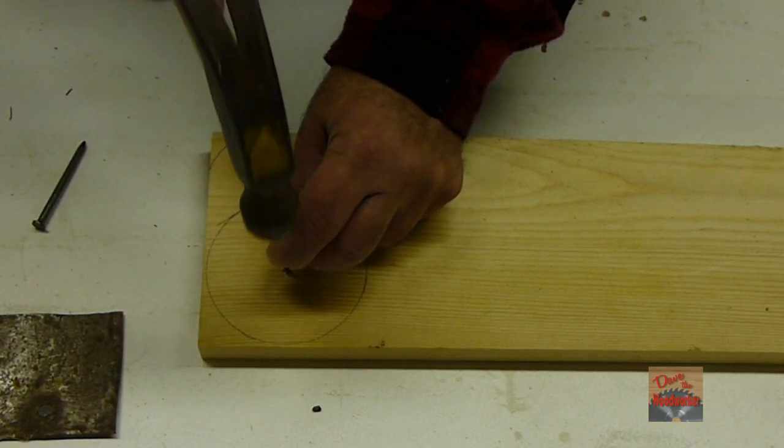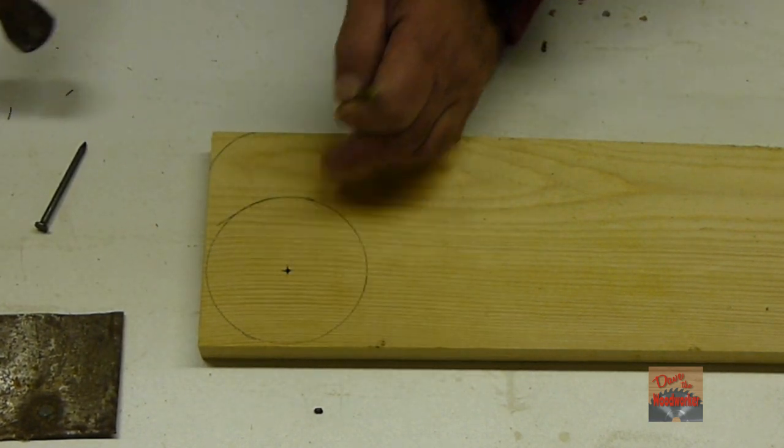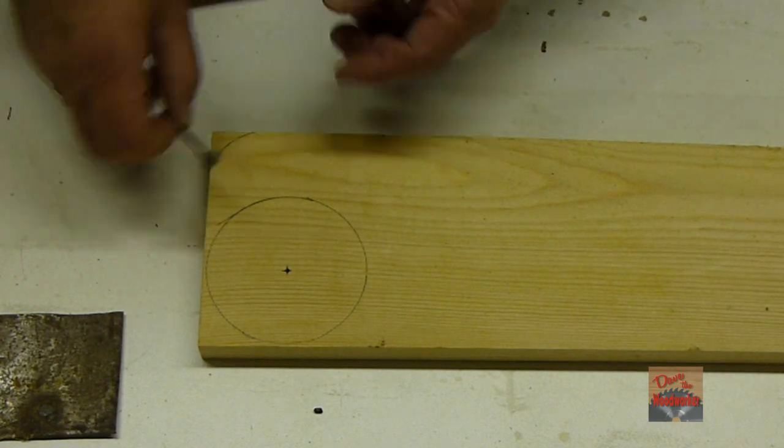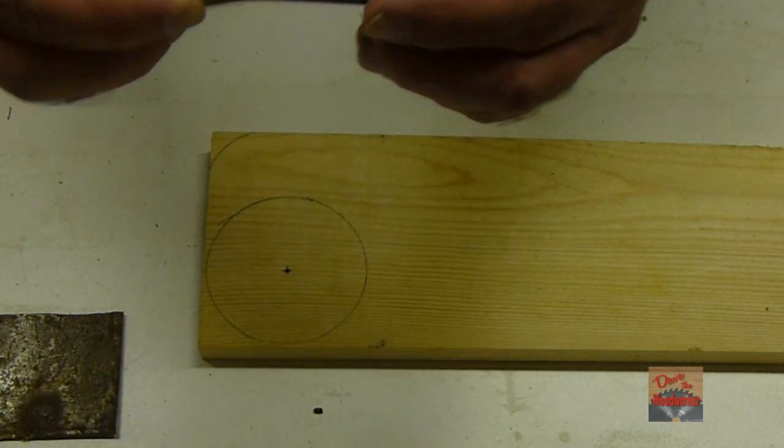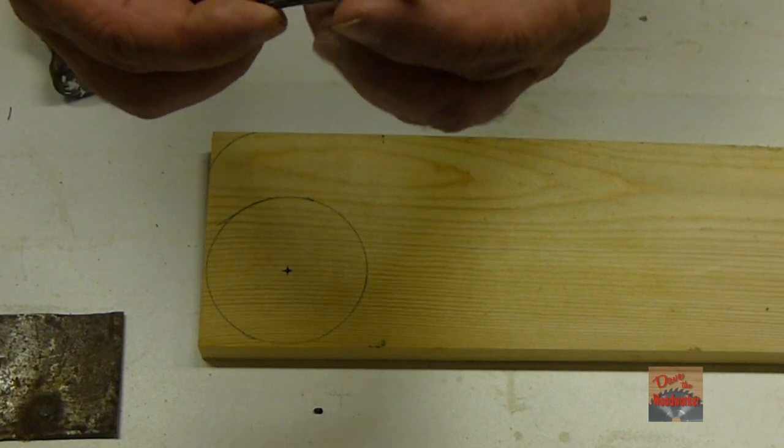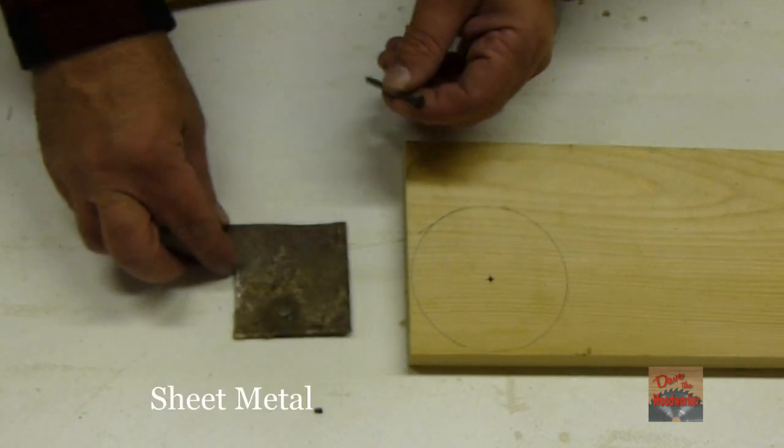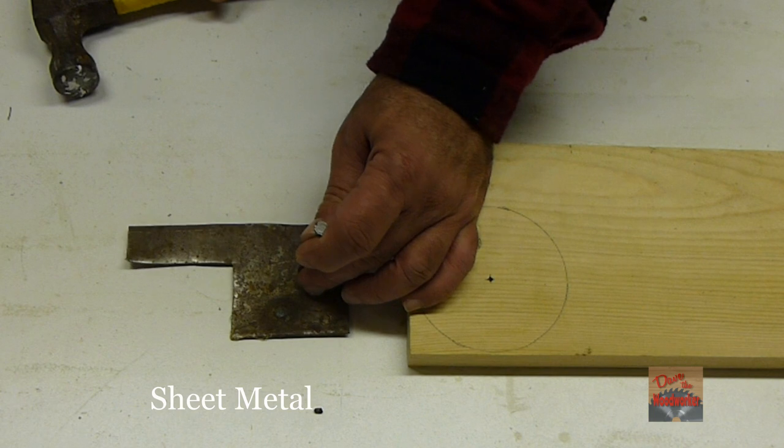If you've got some of these masonry nails with these little flutes on here, they're hardened and you can also use them on metal.